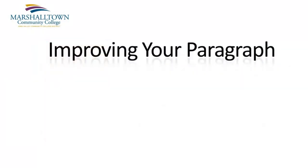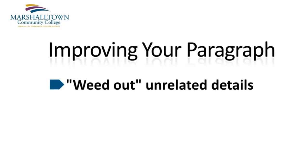One way to make your paragraph more concise is to simply delete, or as I like to say, weed out, any details that are not directly related to the topic sentence of your paragraph. As you start doing more writing, you'll discover that in the early stages of composition, it's easy to drift from your main topic. This is not really a problem in the beginning stages of your first draft, because it's always good to get a lot of ideas down on paper as quickly as you can. Just keep in mind that later on, you'll probably want to weed out some of these ideas to make your paragraph more concise.